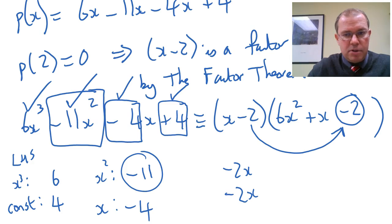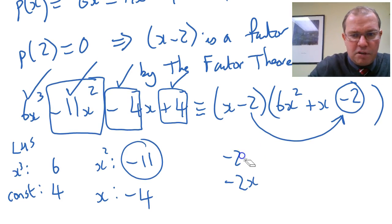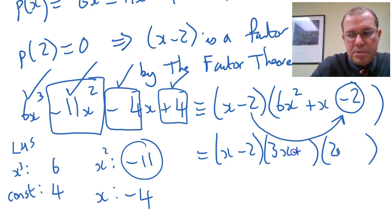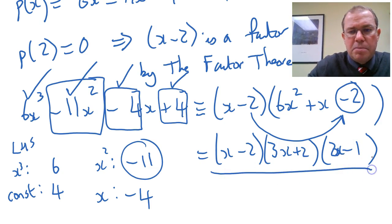Just for finishing this off properly, let's just factor this fully. Finally, 6x squared plus x minus 2 goes to 3x and a 2x, and it would be a plus 2 and a minus 1. And then we fully factored the polynomial.